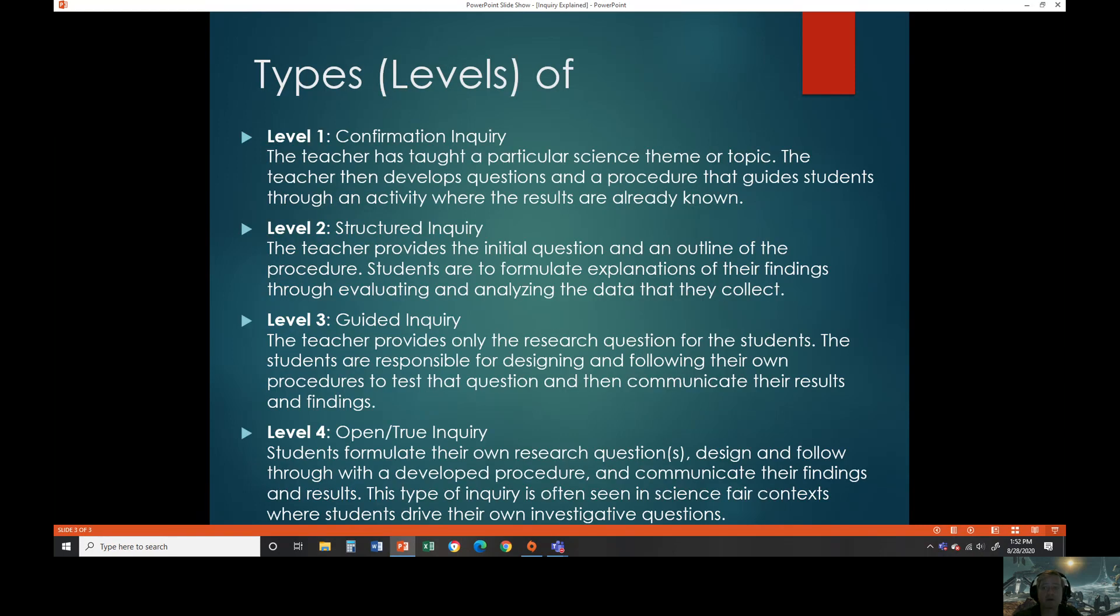So this first one is talking about confirmation inquiry. So this is what a lot of teachers do when they say they're doing inquiry, but the students aren't really being active learners. You typically have a teacher who taught a particular science theme or topic, and then they give a lab in the classroom. The teachers direct the students through that lab, and what happens is they're doing a lab that reinforces what they just learned about. The teacher will teach a topic, then we do a lab that confirms and shows what they just talked about. So that's a level one confirmation of inquiry where students are doing some activities, but we already know what their results are going to be.